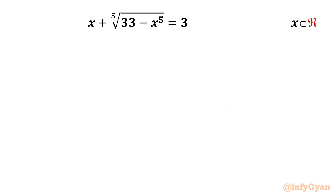Welcome back to Infigyan, my dear friends. In this video we are having another interesting radical equation problem: x plus the fifth root of (33 minus x)^5 equals 3. We have to find out the real values of x.